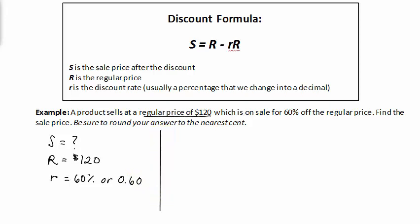So let's find the sale price. S equals R minus r times R. The sale price is $120 minus the rate, 0.60, times the regular price, which is $120.